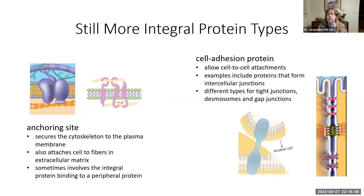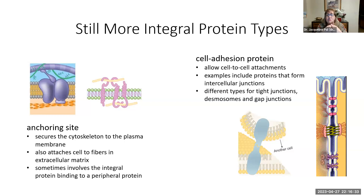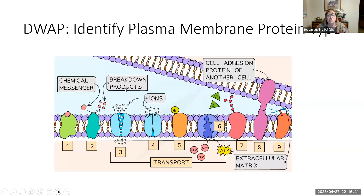The last category is cell adhesion proteins — how cells stick together. Think of the three types of intercellular junctions: the tight junction at the top, the anchoring junction or desmosome in the middle, and the gap junction at the bottom. All are totally different from each other, but they are all integral proteins and all make two cells attach to each other, each for a different purpose.